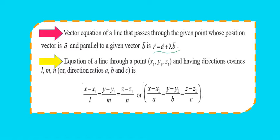Now for the Cartesian form: if we have a point (x₁, y₁, z₁) having direction cosines l, m, n or direction ratios a, b, c, then the equation of the line is (x − x₁)/l = (y − y₁)/m = (z − z₁)/n, or in terms of direction ratios: (x − x₁)/a = (y − y₁)/b = (z − z₁)/c. So if the point and its direction cosines are given, we use this formula to find the equation of the line. Pause and note down these equations.